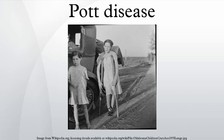Pott's disease is a presentation of extra-pulmonary tuberculosis whereby disease is seen in the spinal vertebrae. Extra-pulmonary tuberculosis can affect the spine as a kind of tuberculous arthritis of the intervertebral joints. It is named after Percival Pott, a British surgeon. Scientifically, it is called tubercular spondylitis and is most commonly localized in the thoracic portion of the spine.